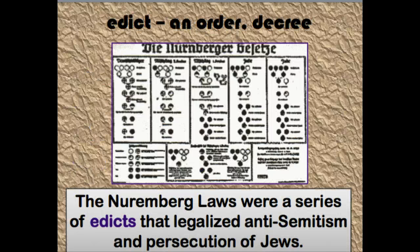The Nuremberg Laws were a series of edicts that legalized anti-Semitism and the persecution of Jews. This is something we'll be talking about in class this week — how the Nazis justified calling the Jews a race instead of recognizing them as a religion. This particular poster or chart explains that, and it's based on who your grandparents were. I'll show you this in class.